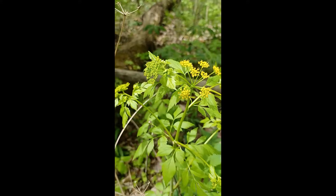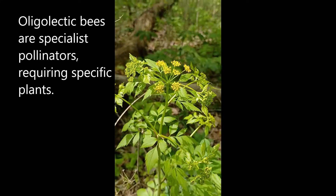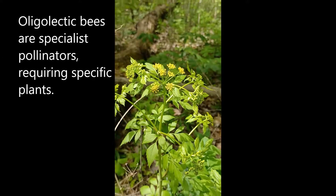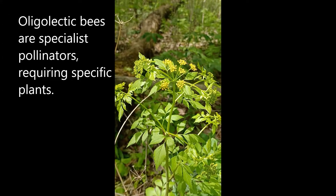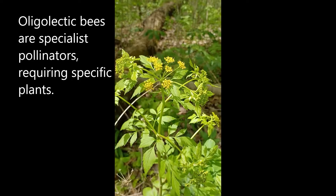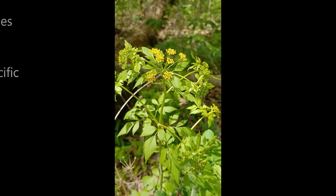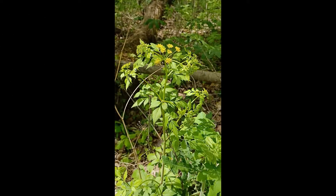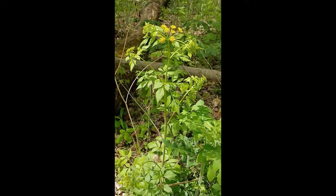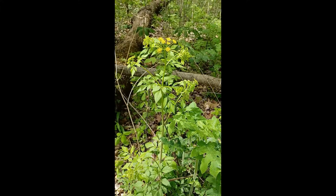Additionally, there's a native species of bee — Andrena ziziae — which is an oligolectic bee that requires the pollen of this plant exclusively. It only eats the pollen from this plant, so without this plant you lose that bee as well. So you've got two butterflies and a bee that depend on this particular plant.